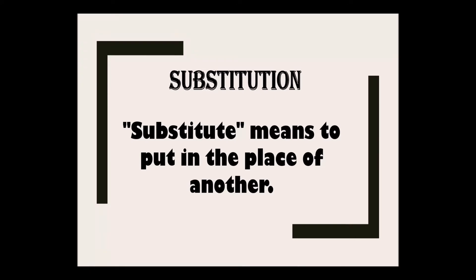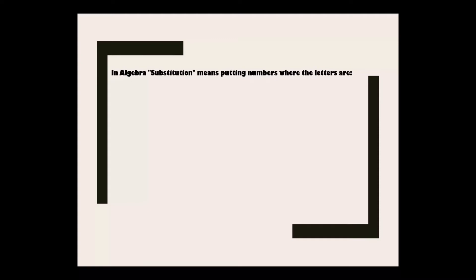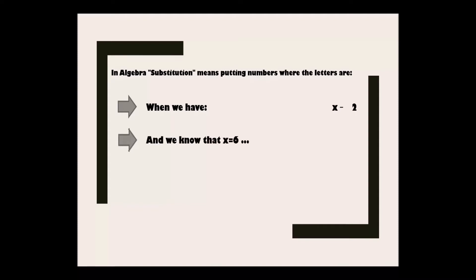In algebra, substitution means putting numbers where the letters are. When we have x minus 2 and we know that x equals 6, then we can substitute 6 for x — that is 6 minus 2 equals 4.